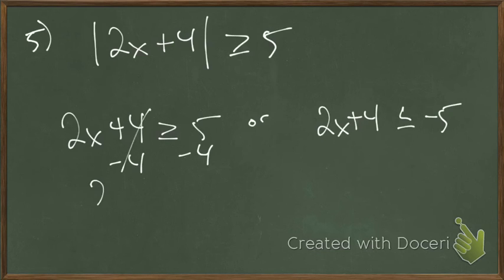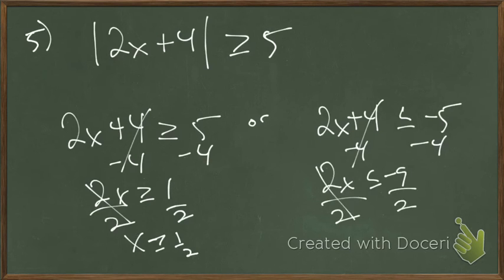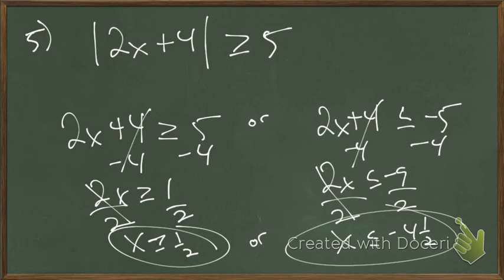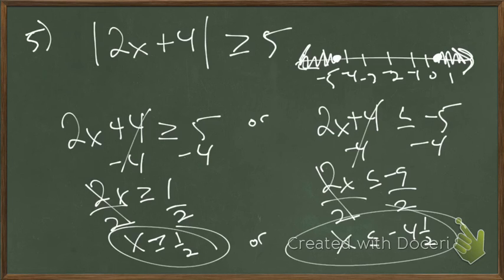Then we solve for x. 2x is greater than or equal to 1, so dividing by 2 gives x greater than or equal to one-half. On the other side, x is less than or equal to negative 4 and a half. Graphed on a number line: solid dot at one-half going right, solid dot at negative 4 and a half going left. The greater-than produces an 'or' — to be bigger, you need a bigger negative or a bigger positive.